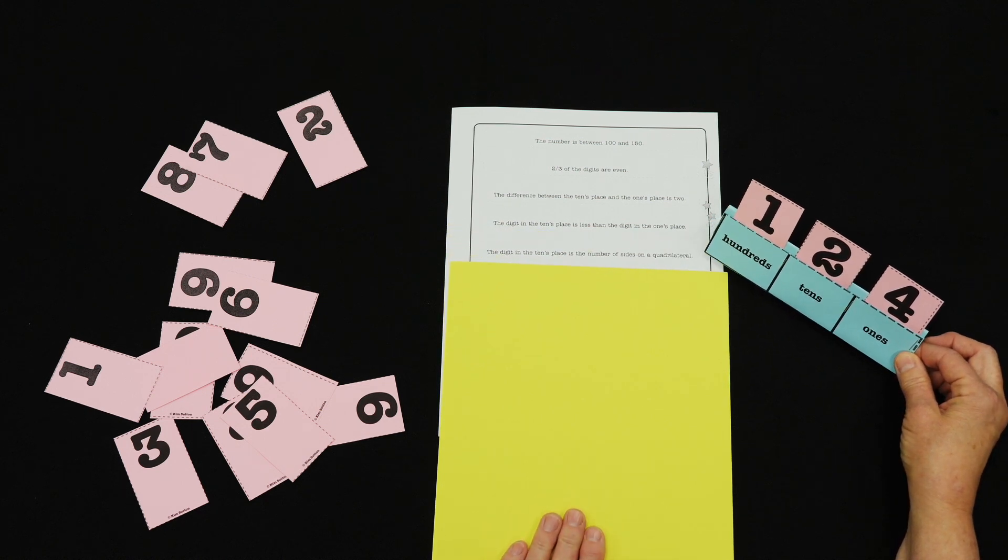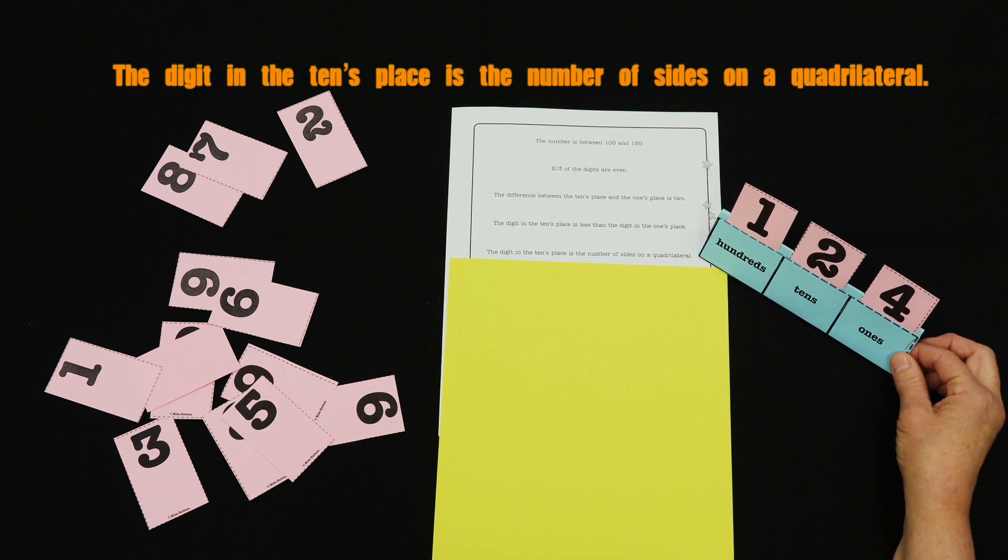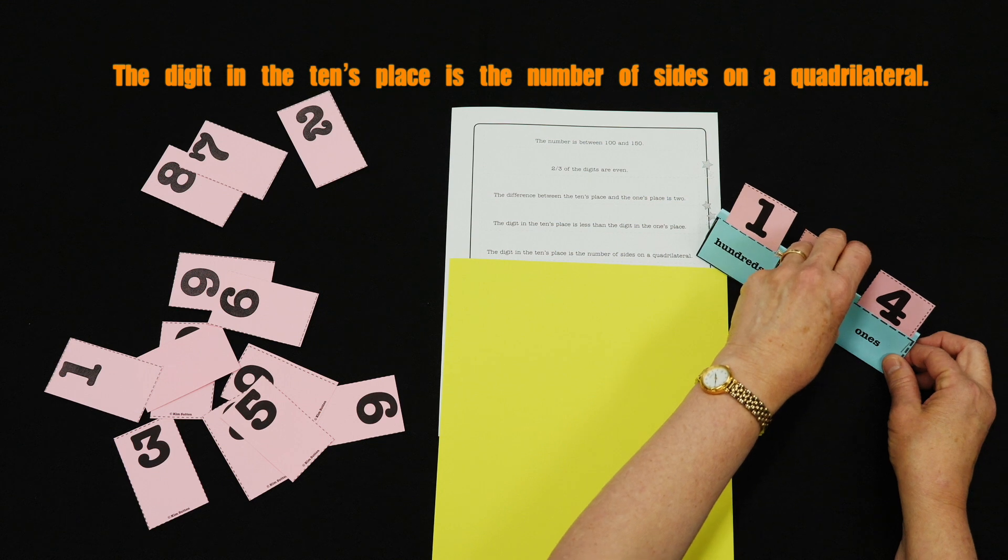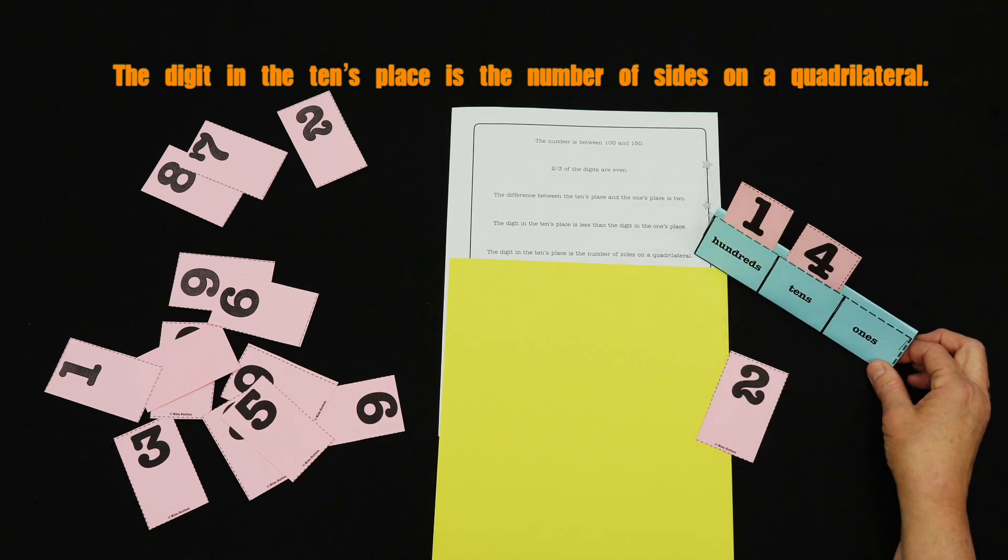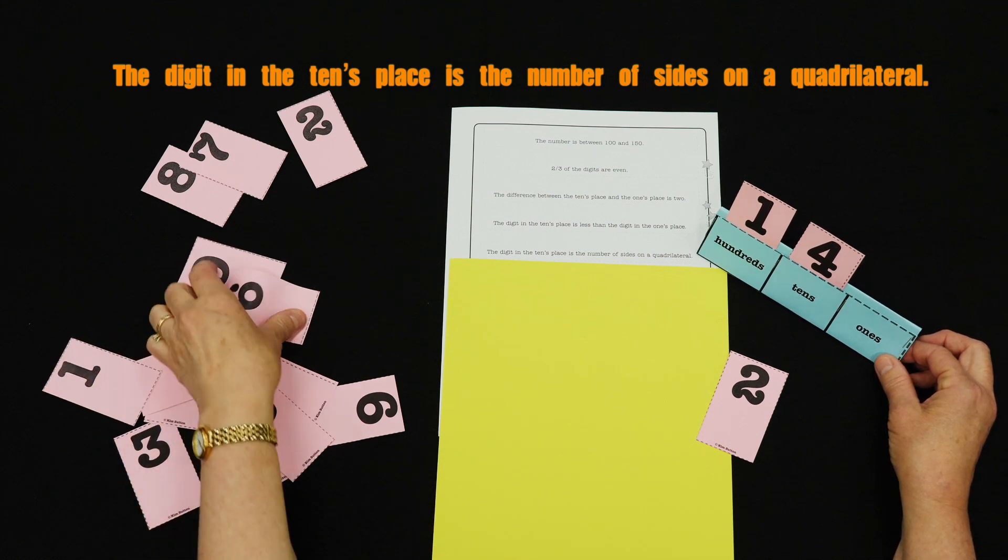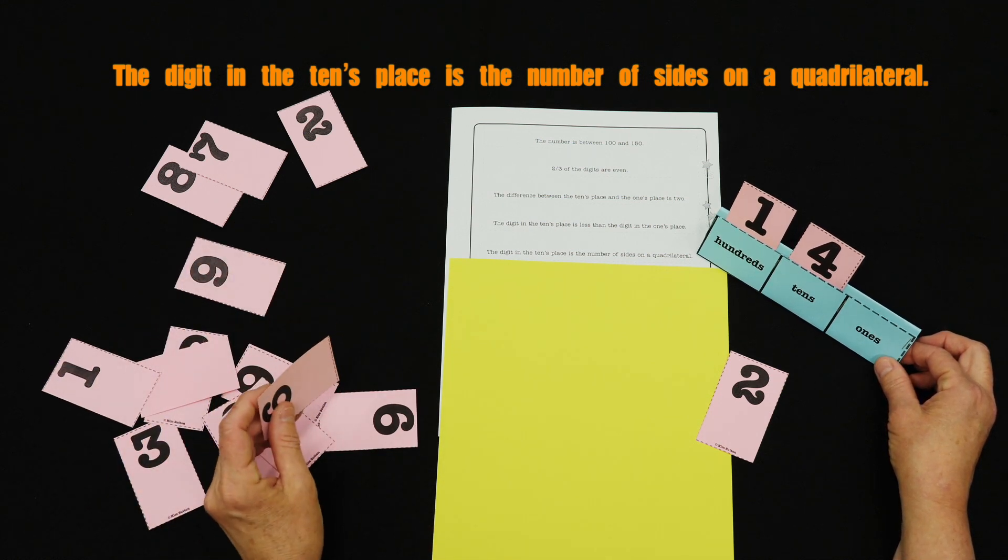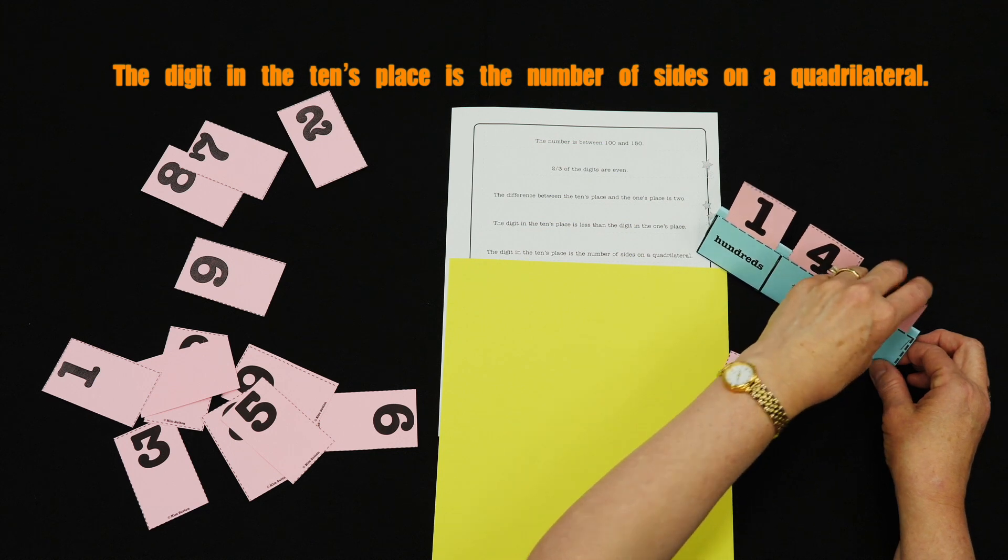Next clue is revealed: digit in the tens place is the number of sides on a quadrilateral. Oh, I've got to make a change. But I've got to remember all my other clues. Oh, only thing this can be is a six in the ones place.